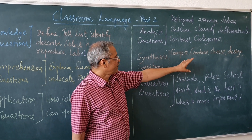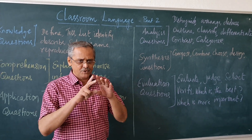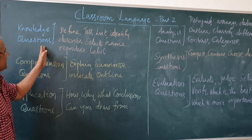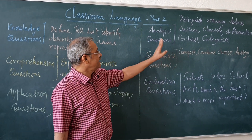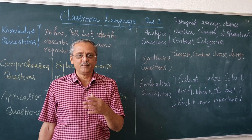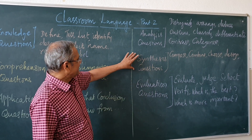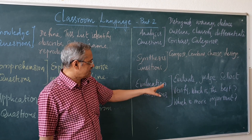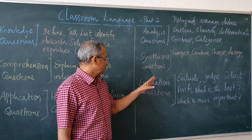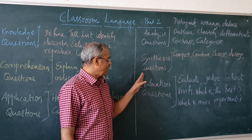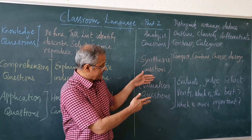Then synthesis questions use words like compose, combine, choose, design. These are the words we have to use when testing children at different levels, because our testing should not end only with knowledge or comprehension questions. If we apply our skills across all these levels, the children's understanding will be better, they will love to learn, and you will also be a professional in your career. Then evaluation questions use words like evaluate, judge, select, verify, which is the best, which is more important — to evaluate subject knowledge, thinking skills, or understanding.